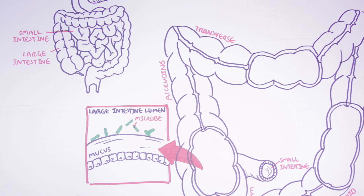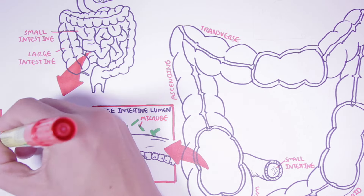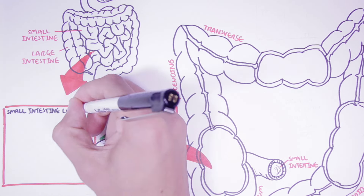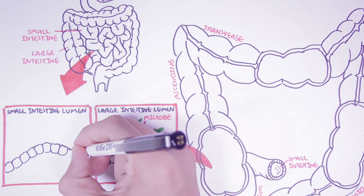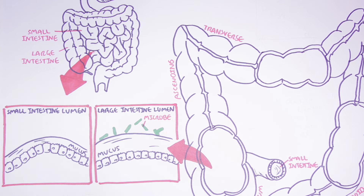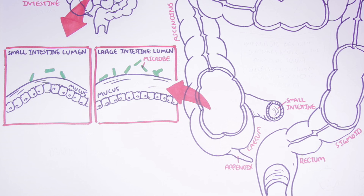The highly dense microbial community and the host intestinal cell linings are separated by a thick layer of mucus in the large intestine. Interestingly, if we compare this to the small intestine, the small intestine and the microbes are only separated by a thin layer of mucus — much thinner compared to the mucus layer of the large intestine.